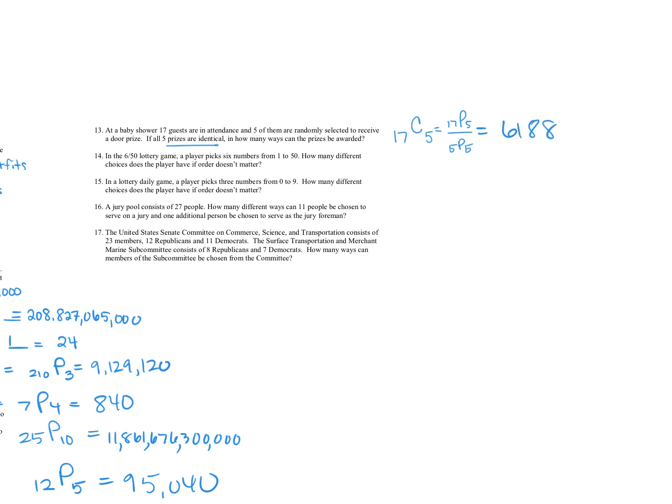All right, for number 14, we have a lottery game. It's called a 6/50 lottery game. So six numbers from the numbers one to 50. How many different choices if the order doesn't matter? So we're going to write in there 50. That's how many we have to choose from. We get to choose any six numbers. And if we enter that into the calculator, we're going to get 15,890,700. We have another lottery game for number 15. We're picking three numbers this time from the numbers zero to nine. So there are 10 numbers to really choose from zero to nine. There's 10 digits. We want to choose three, and that's going to be 120 different ways.